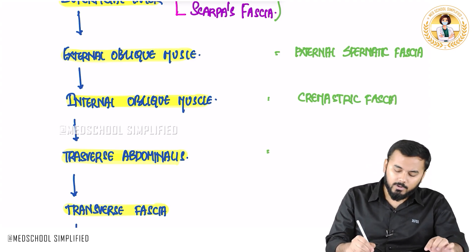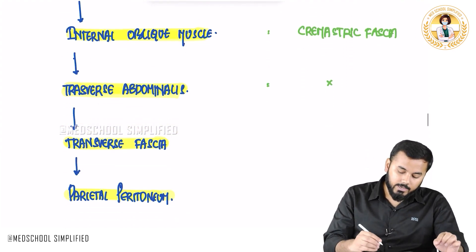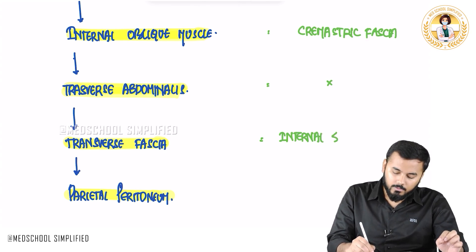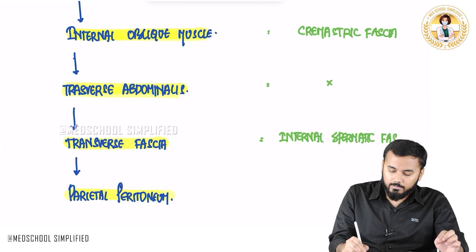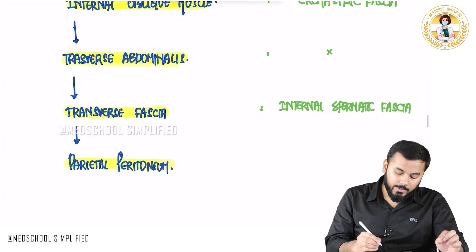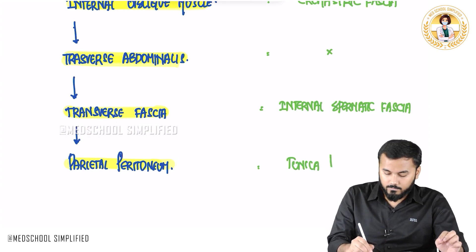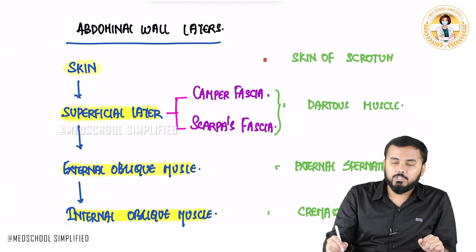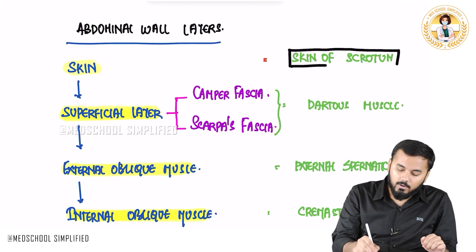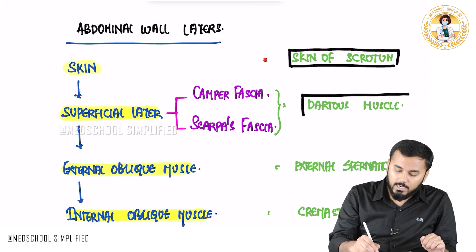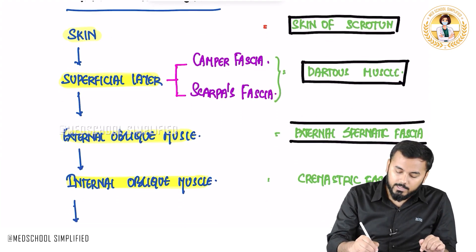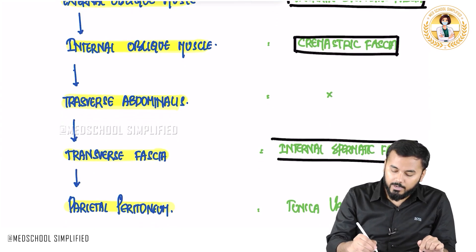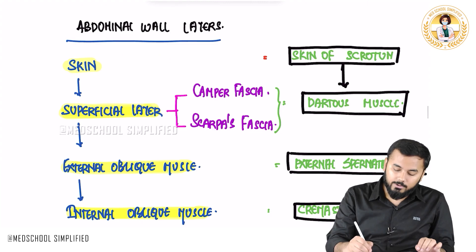The transversus abdominis muscle does not continue as anything. However, the transversalis fascia continues as the internal spermatic fascia. And finally, the parietal peritoneum continues as the tunica vaginalis. So the scrotal layers are: skin of scrotum, dartos muscle, external spermatic fascia, cremasteric fascia, internal spermatic fascia, and tunica vaginalis.